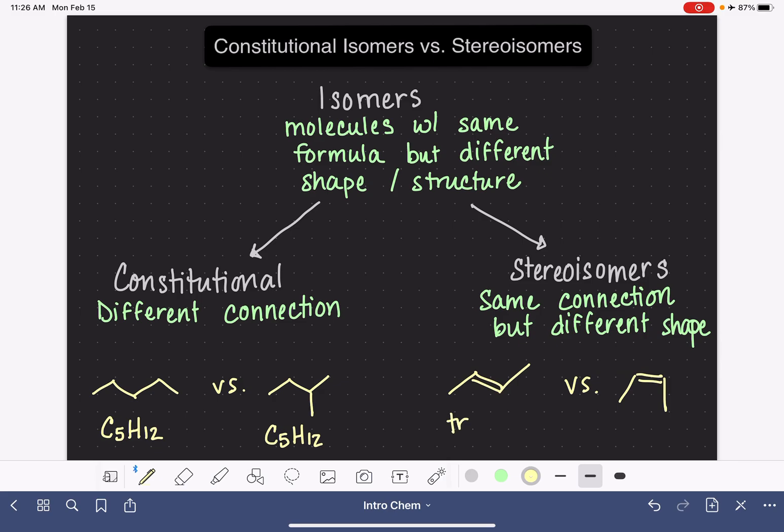And we know that we would call this the trans isomer, and we would call this the cis isomer. There are other types of stereoisomers as well, and that's what I'll be talking about in the next couple of videos.